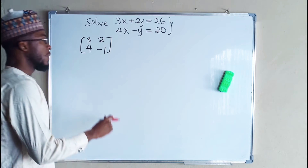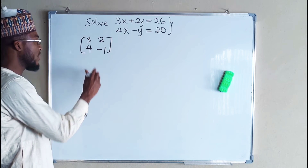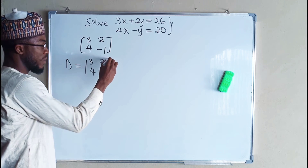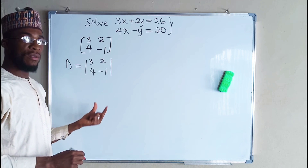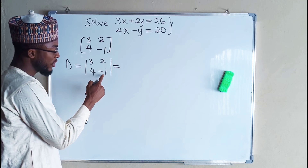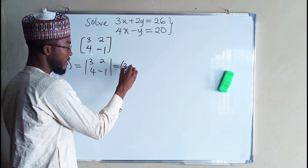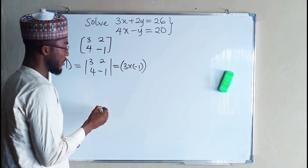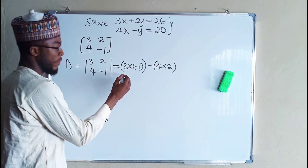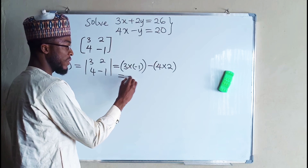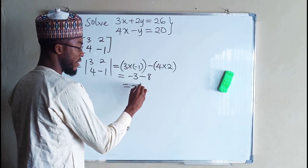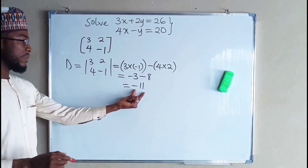The second step: you need to find the determinant of this matrix D, which is 3, 4, 2, and negative 1. The determinant of this matrix is the difference of the product of the diagonal elements: 3 times negative 1, minus 4 times 2. This gives us negative 3 minus 8, which equals negative 11. This is the determinant of this matrix.